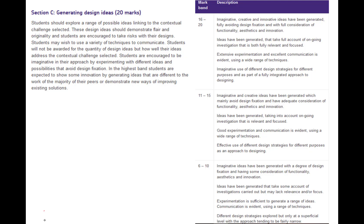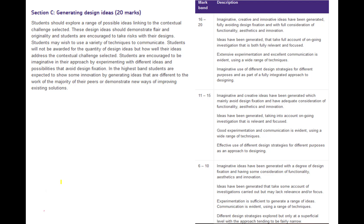We're doing exploring a range of possible ideas. What that means is you can't just come up with one idea and go, that's it. Do make sure you're linking back to your brief. They're looking for flair, which is about being creative. They're looking for things which are different - that's originality. And it says take risks, so don't be frightened of coming up with a daft idea that doesn't work, because that's how you explore ideas.